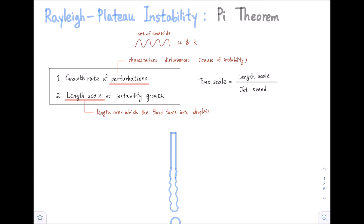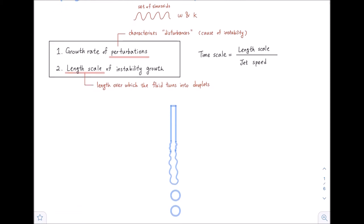We will look at how these perturbations can be expressed in our Navier-Stokes equation. But before that, let's look at how the length scale is affected. We can say that this length scale is the length over which the fluid turns into droplets. At first we have a nice-looking cylinder, but with the passage of time, it will break up into tiny droplets. There is going to be a critical length — the length scale over which the fluid will begin to break up. If you know the length scale and the jet speed, you can also determine our time scale, because time is simply length over speed.